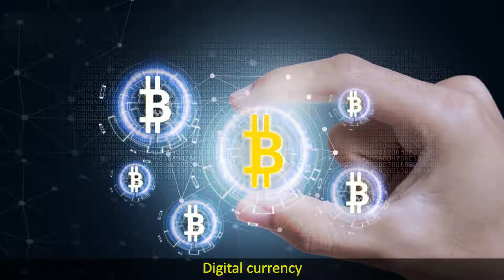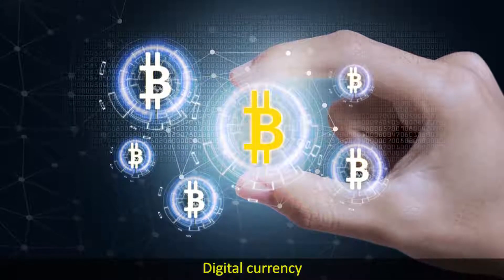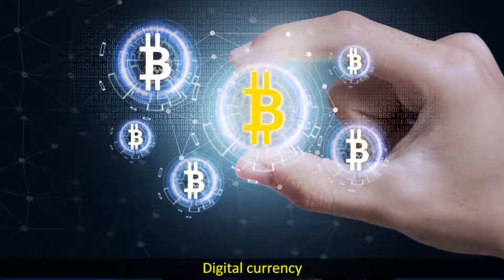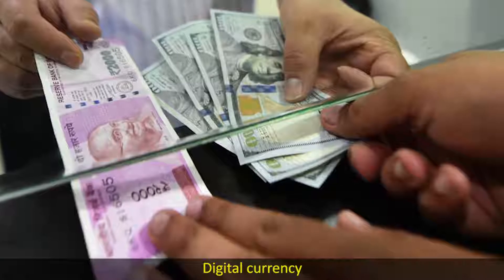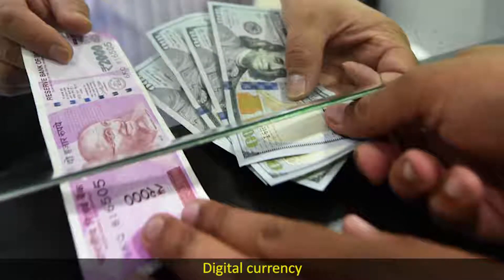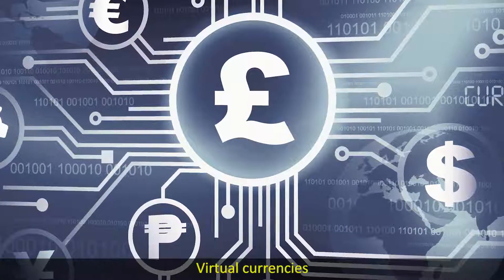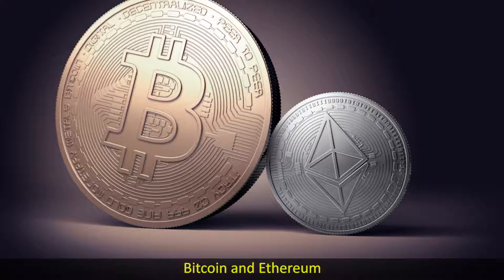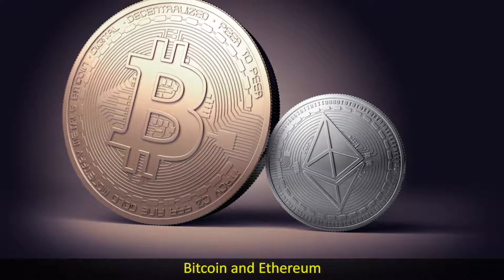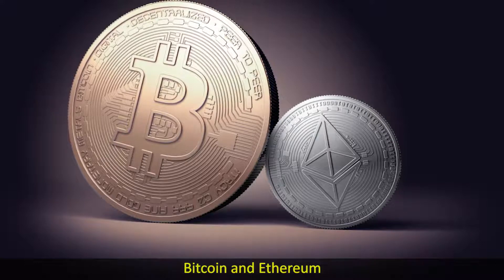Digital currency is the overall superset that includes both virtual currency and cryptocurrencies. Digital currencies are issued by a country's central bank as fiat currency notes, but virtual currencies are subsets of digital currencies. Bitcoin and Ethereum are cryptocurrencies, which are subsets of the virtual currency group. Most of us might have heard about them.